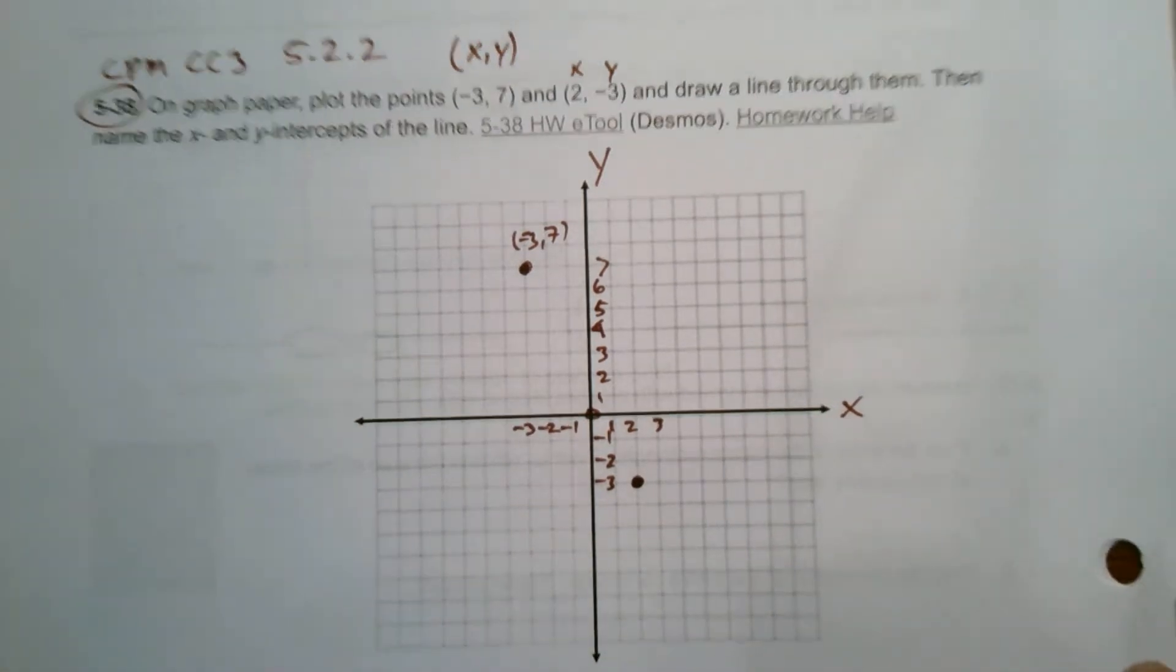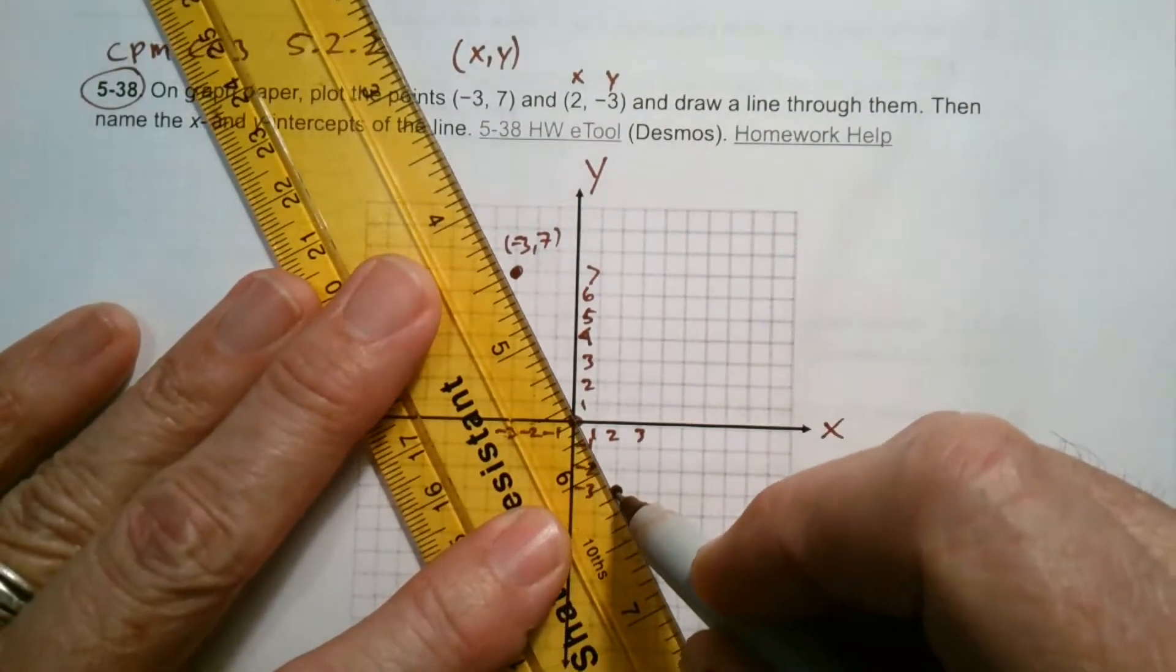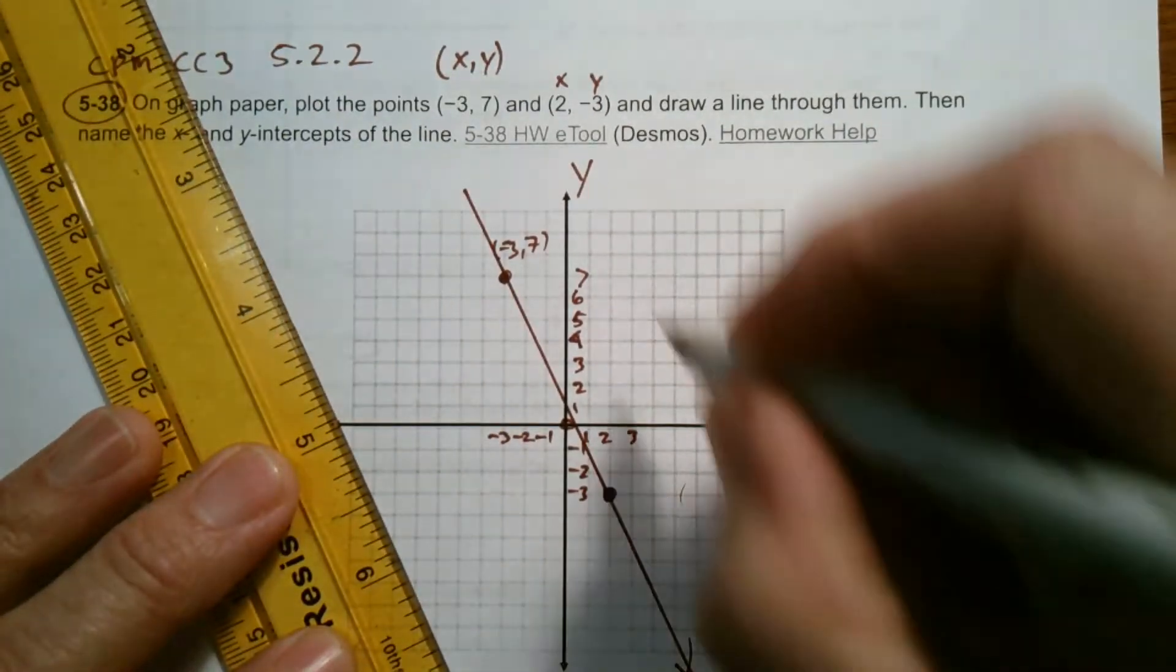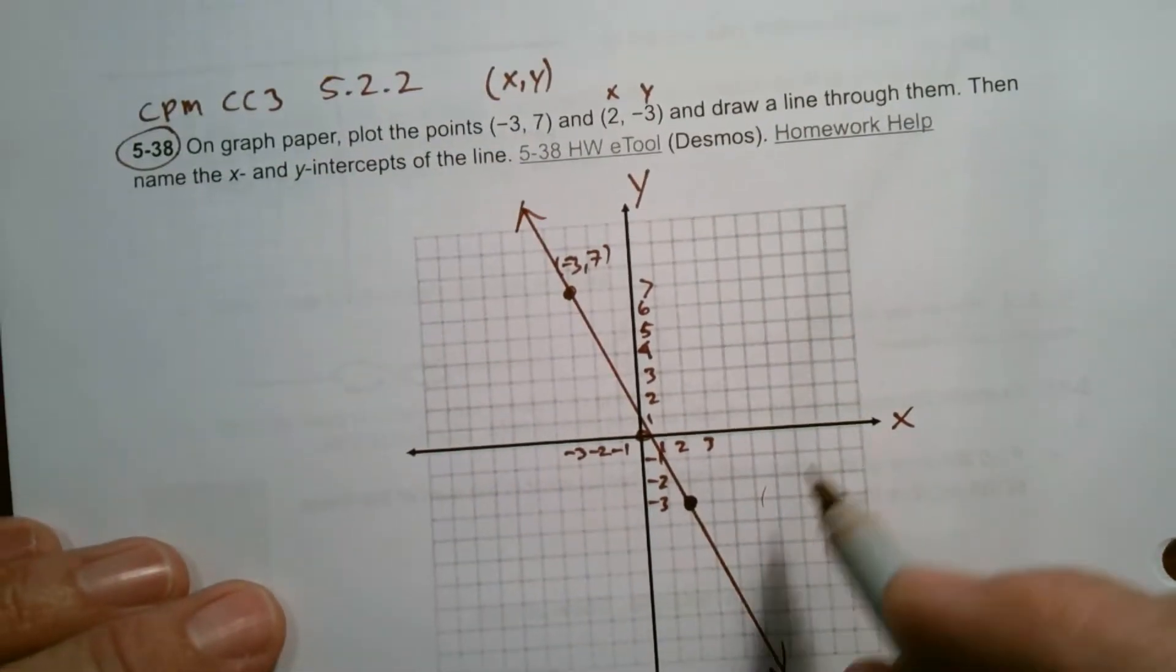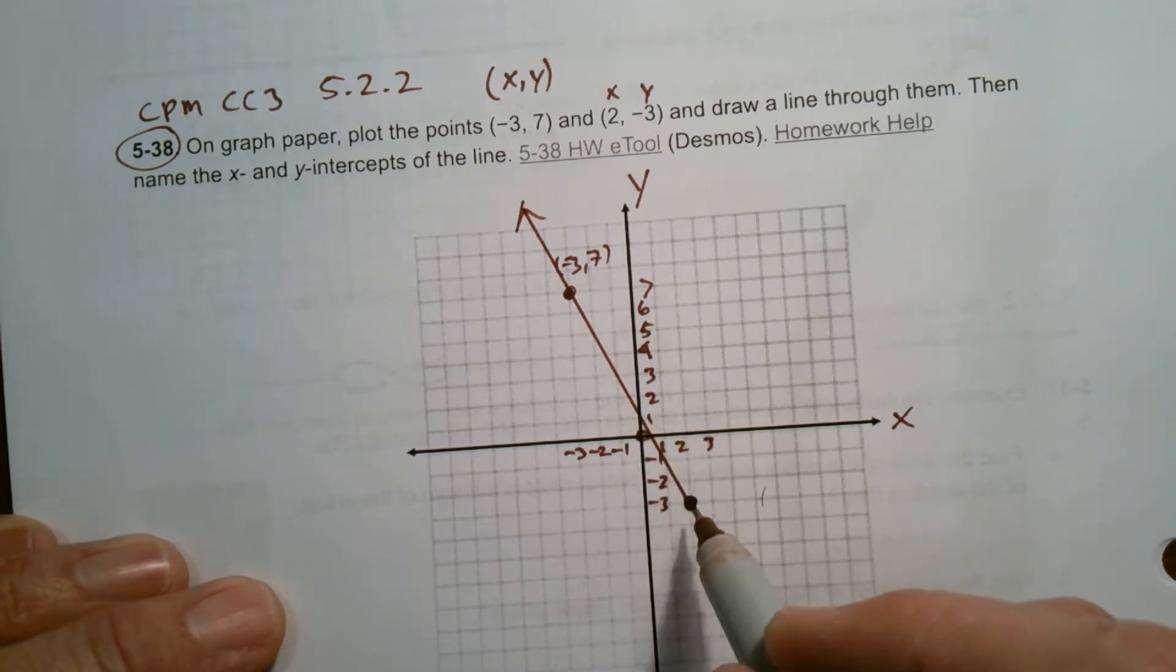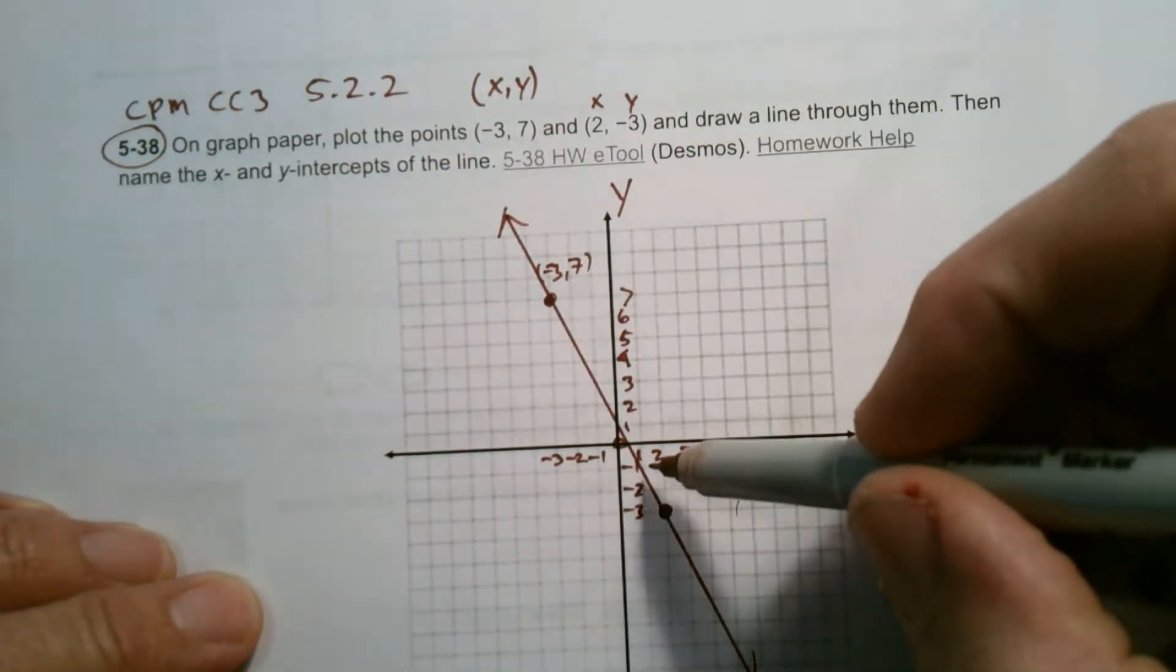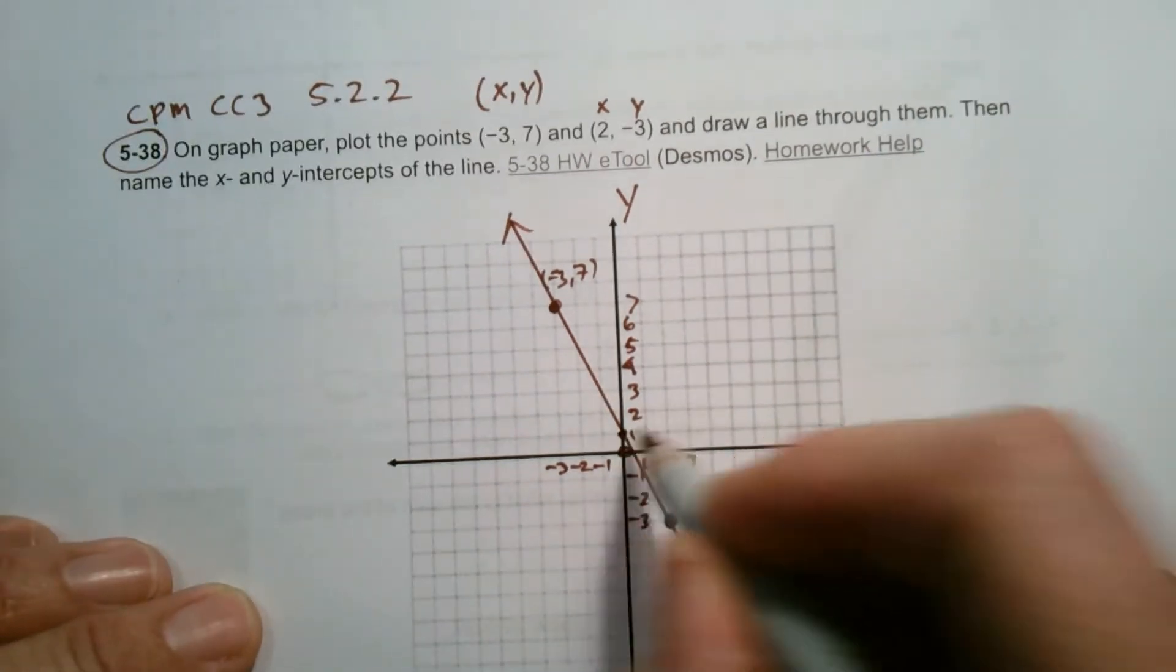So it wants me to connect them and then find the Y and X intercept. So I'm going to connect them like so. Okay. And then decide where that Y and X intercept are. So let's see. It looks like if I'm connecting, it looks like it crossed 1. Let's see if I can determine if this is right. So from what it looks like, I'm crossing there. It looks like I'm going through 1 from my Y intercept is what it looks like. I think so.